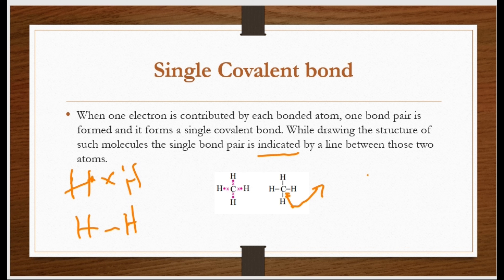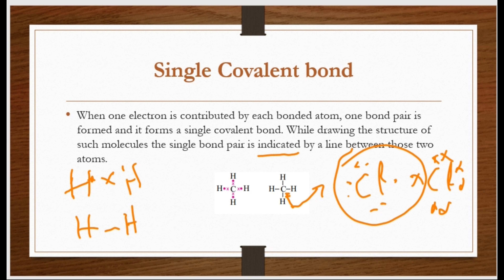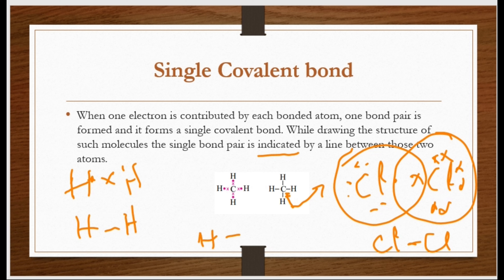Similarly, do chlorine ke darmiyan bhi isi tarah se bond banega — har chlorine apna ek ek electron share karega, to unka octet complete ho jaata hai. H aur Cl ke darmiyan banne wala bond mein hydrogen ka duplet complete ho jaata hai. Chlorine ke valence shell mein 7 electrons hain, usko 1 ki deficiency thi aur wo hydrogen ne uske saath share kar liya. Ab chlorine ka octet bhi complete ho gaya.